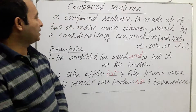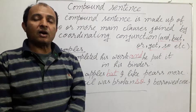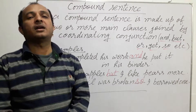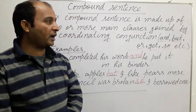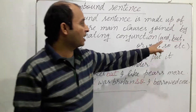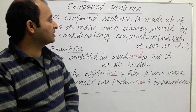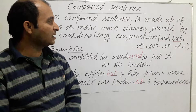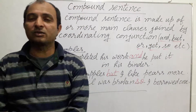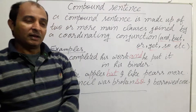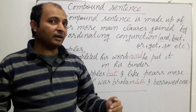A compound sentence is made up of two or more main clauses. These main clauses are linked or joined with a coordinating conjunction — and, but, or, yet, so, etc. Main clause means a part of a sentence which keeps its meaning fully understandable for the readers.